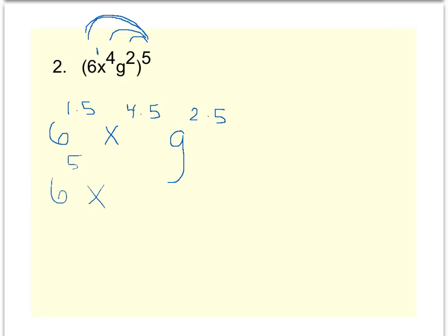So we'll get 6 to the 5th, oh excuse me, x to the 20th, and g to the 10th. The one thing I would do then to make this even better is 6 to the 5th is 7,776 x to the 20th, g to the 10th.